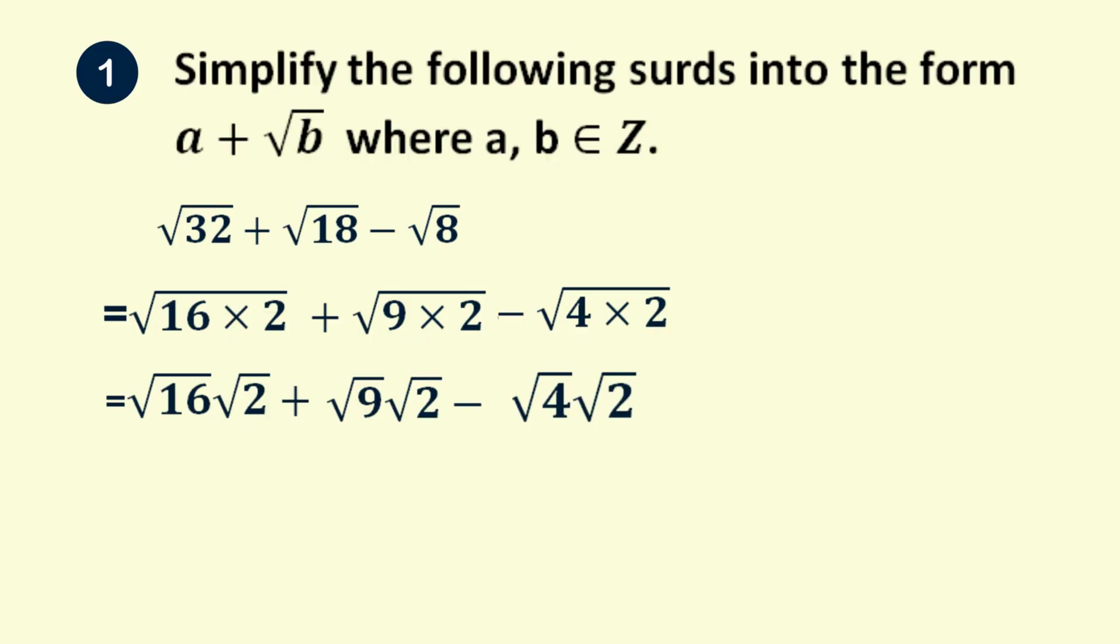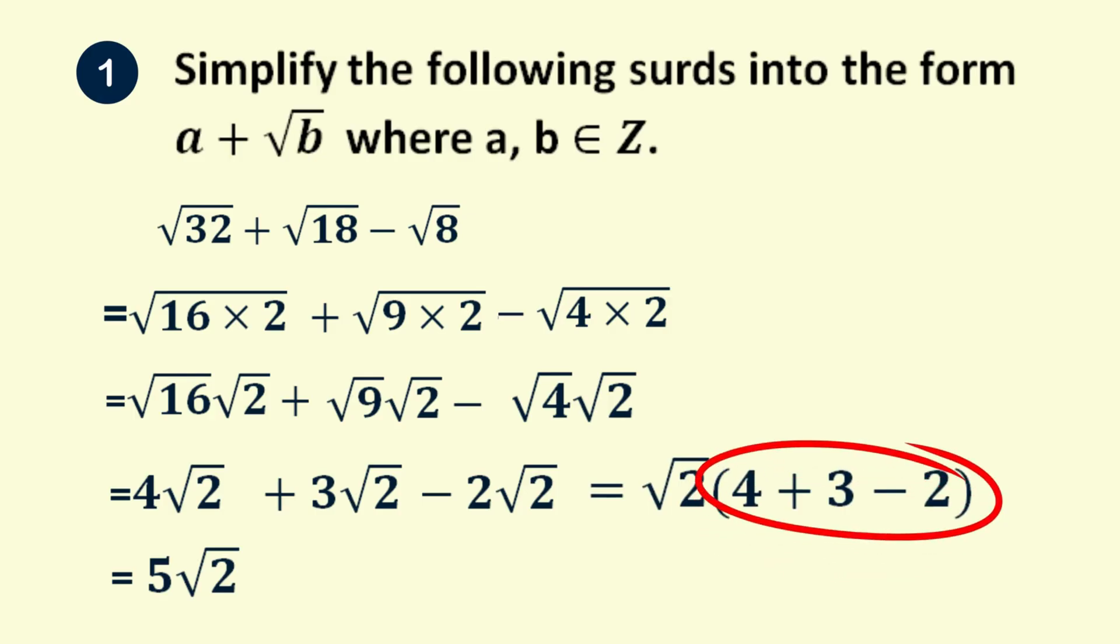Now root 16 is 4, root 9 is 3, and root 4 is 2. Group all the terms in root 2, and we get 5 root 2. Another way to see this is to factor root 2 from each term, and we should get 4 plus 3 minus 2 in the brackets, which is the same as root 2 times 5, or 5 root 2.